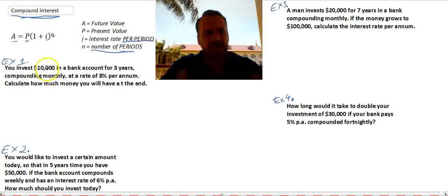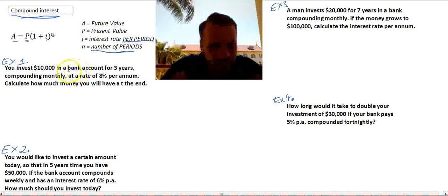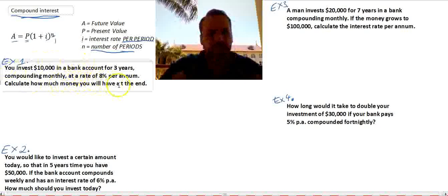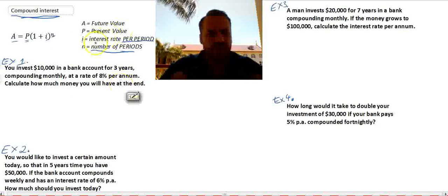Okay, so our first question. You invest $10,000 in a bank account for three years, compounding monthly at a rate of 8% per annum. Calculate how much money you will have at the end.